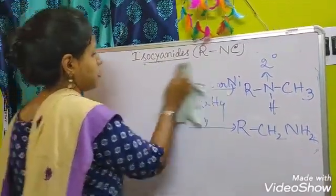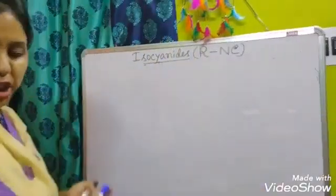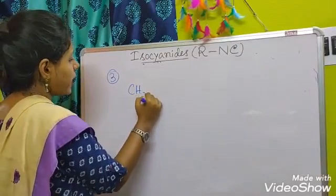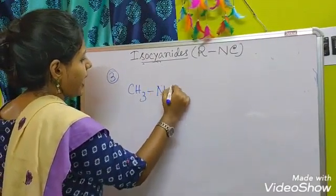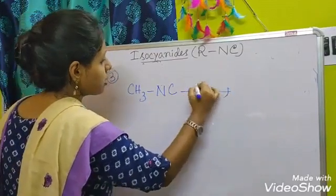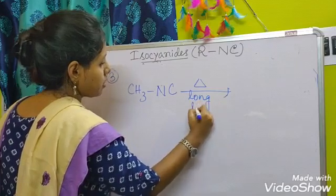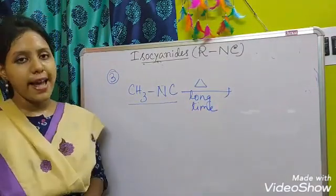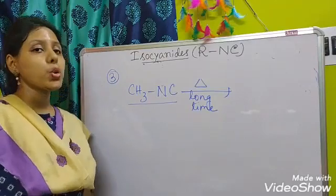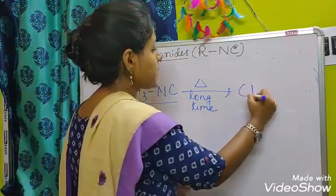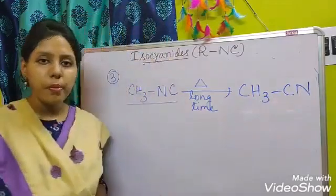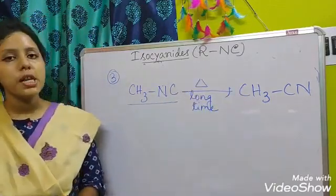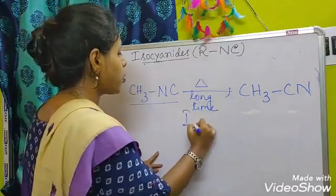The last reaction is isomerization. If we heat the isocyanide for a longer period, there will be a change in the arrangement and it will convert to the more stable cyanide form. For example, CH₃NC is converted to CH₃CN. This process is known as isomerization.